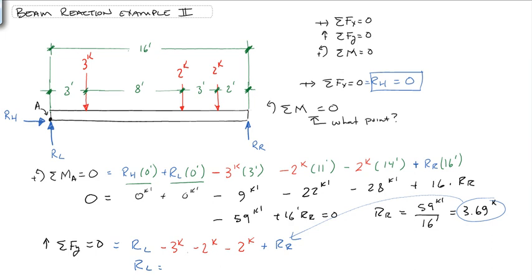So RL is equal to, of course we know RR is 3.69, so we get 7 kips minus 3.69 kips.